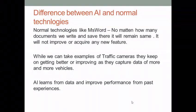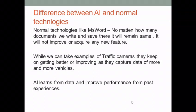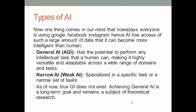If we compare traditional technologies with AI, we can see that normal technologies like MS Word and MS PowerPoint — no matter how many documents we write or how many presentations and assignments we make and save — they will remain the same, keep performing the same functionalities they were made for, and will never improve or acquire any new features. If we take the example of AI devices like traffic cameras, they keep getting better and improving as they capture more and more vehicles.